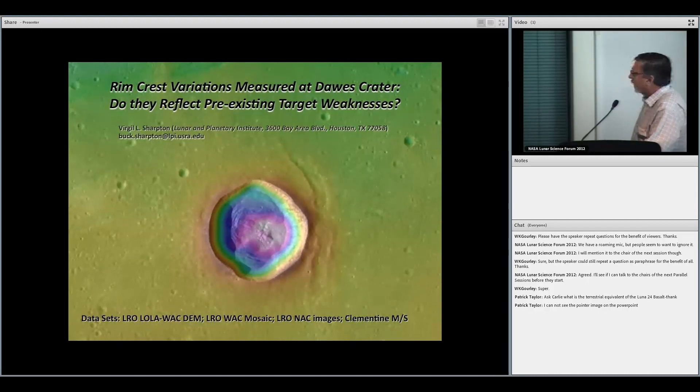Dawes is located in southern Serenitatis. It's about 18 and a half kilometers in diameter.